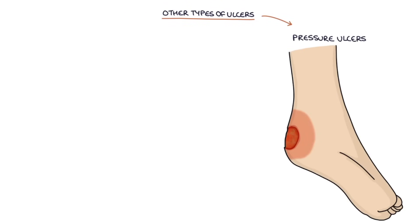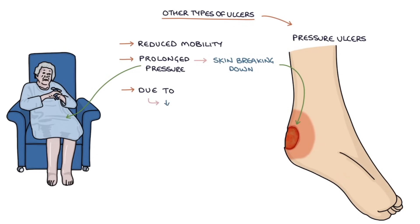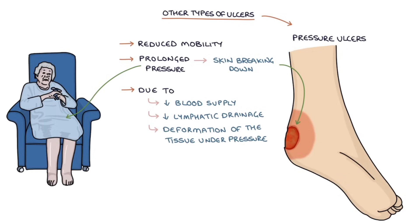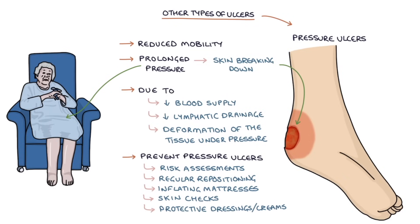Pressure ulcers are typically seen in patients with reduced mobility, where prolonged pressure on particular areas — for example, the sacrum while sitting — leads to the skin breaking down. This happens due to a combination of reduced blood supply causing localized ischemia, reduced lymphatic drainage of the area, and abnormal changes in shape or deformation of the tissues under pressure. Extensive effort is needed to prevent pressure ulcers, including individual risk assessments, regular repositioning, special inflating mattresses, regular skin checks, and protective dressings and creams. The Waterlow score is a commonly used risk assessment tool for estimating an individual patient's risk of developing a pressure ulcer.